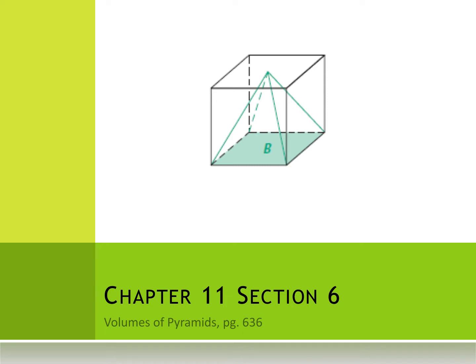Today we're going to cover section six and learn how to calculate the volume of pyramids, and also find a missing height from the formula. The pyramid volume is going to be very similar to the prism. If you think about a square pyramid placed inside a cube, after we calculate the volume of the cube, finding the pyramid's volume is like chopping off a third of that volume.